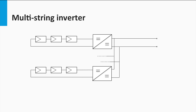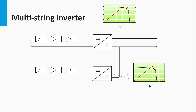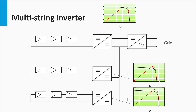Finally, the multi-string inverters. This concept seeks to combine the higher energy yield of a string inverter with the lower costs of the central inverter. Each of the strings is pre-power processed using low-power DC-DC converters, with each string having its own maximum power point tracker implemented alongside the DC-DC converter. All the converters are connected via a DC bus to the inverter and ultimately to the grid. Within a certain power range, only a new string with a dedicated DC-DC converter has to be included to expand the system size.